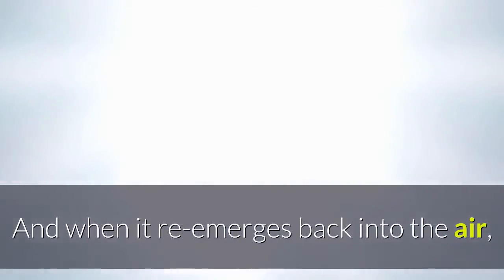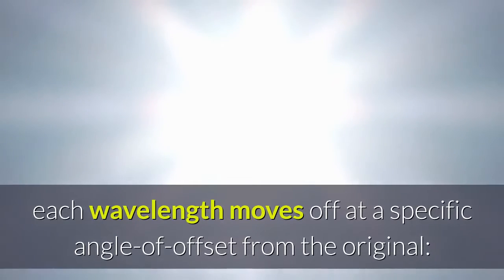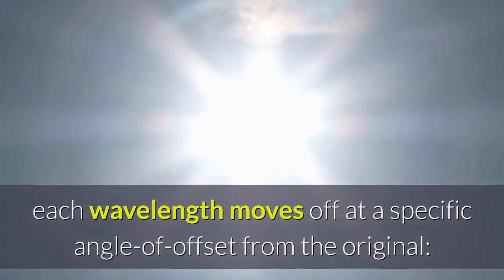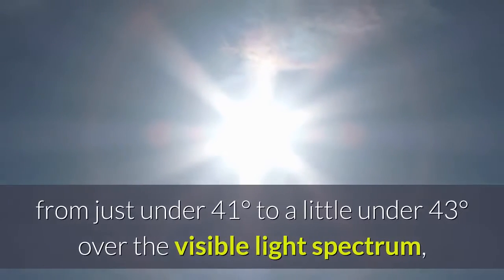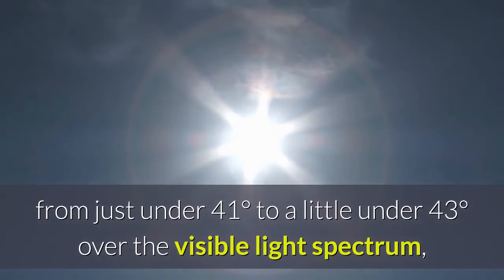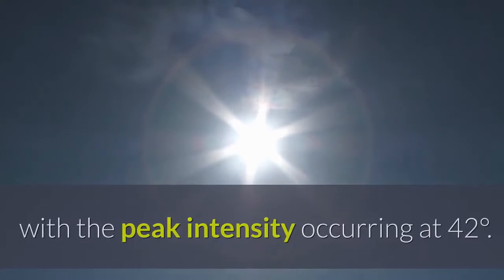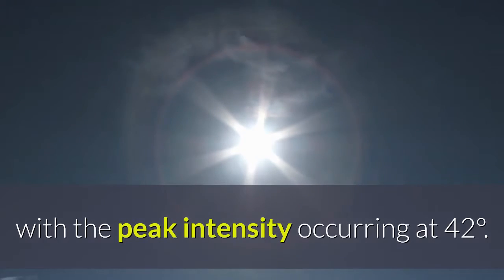And when it re-emerges back into the air, each wavelength moves off at a specific angle of offset from the original, from just under 41 degrees to a little under 43 degrees over the visible light spectrum, with the peak intensity occurring at 42 degrees.